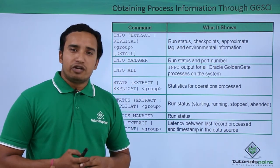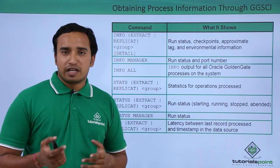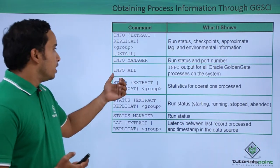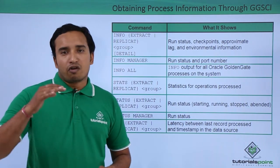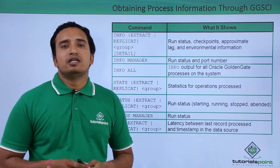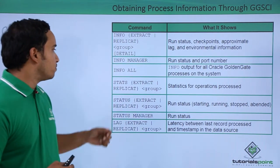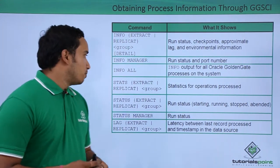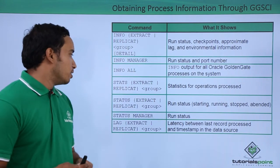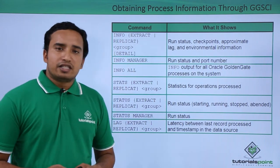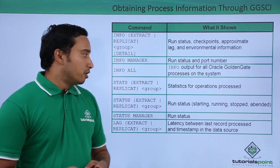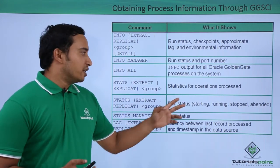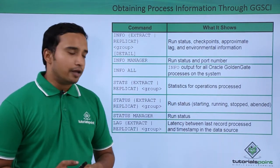INFO MANAGER gives you information about the manager process — whether it is running or stopped. INFO ALL gives you information about all the processes in summary. Apart from that, you can get the statistics of a particular process using STATS EXTRACT or STATS REPLICAT, or get the status using STATUS EXTRACT and STATUS REPLICAT group — whether it is running, stopped, or abandoned.